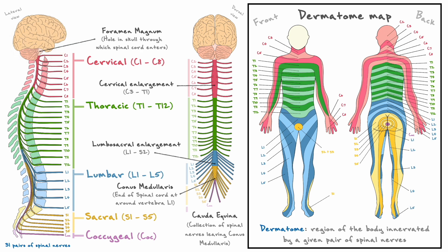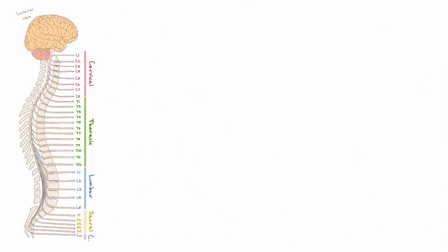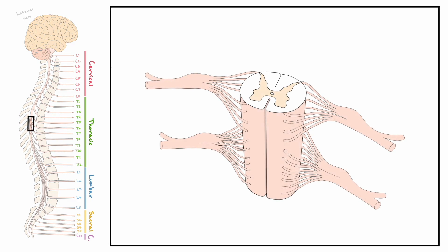These diagrams are packed with all sorts of information, so if it is the first time you see all these words, make sure to go slowly through them to avoid any confusion. With this general anatomy of the external surface of the spinal cord now taken care of, let's take a closer look at the spinal cord without any vertebrae to see how spinal nerves go in and out of this structure.